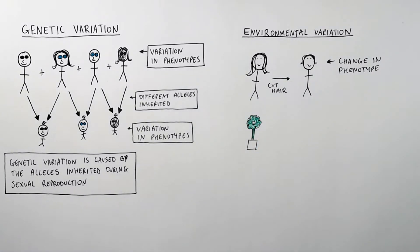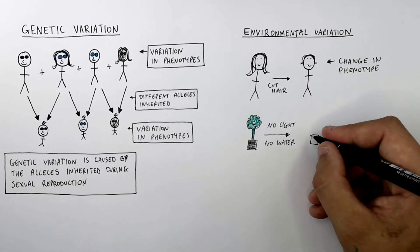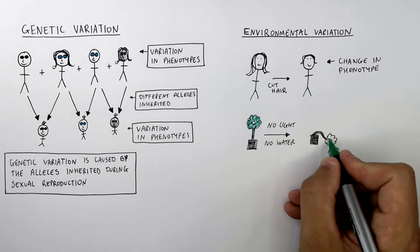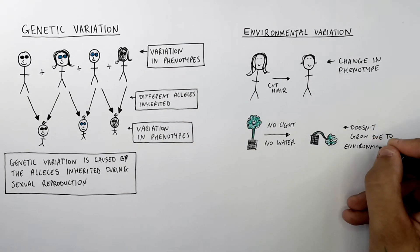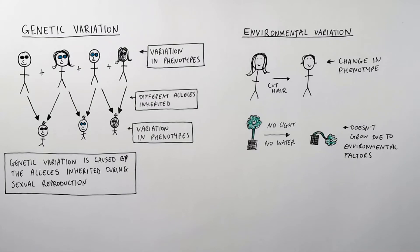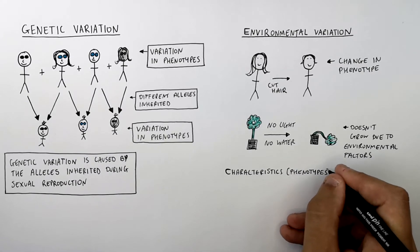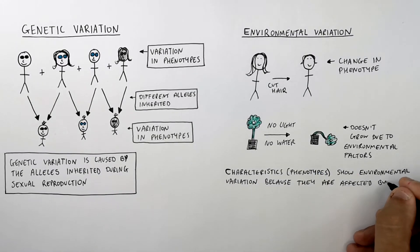This is a plant and it's doing well — it's healthy. All of a sudden, there's no light and no water given to the plant. The plant will then wilt, and the characteristics of the plant will change, so there'll be a change in the phenotype of the plant. The plant doesn't grow due to environmental factors of no light and no water. This is not genetic variation because it did not inherit the inability to grow. So environmental variation refers to characteristics or phenotypes that are affected by the surroundings.